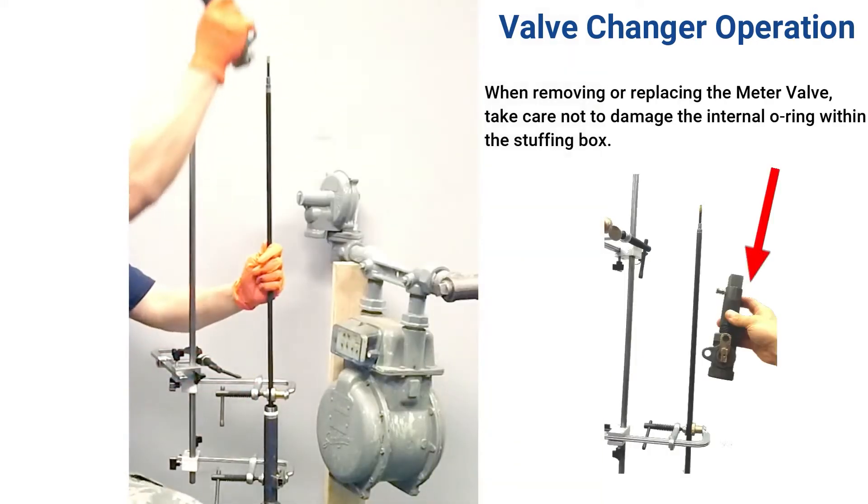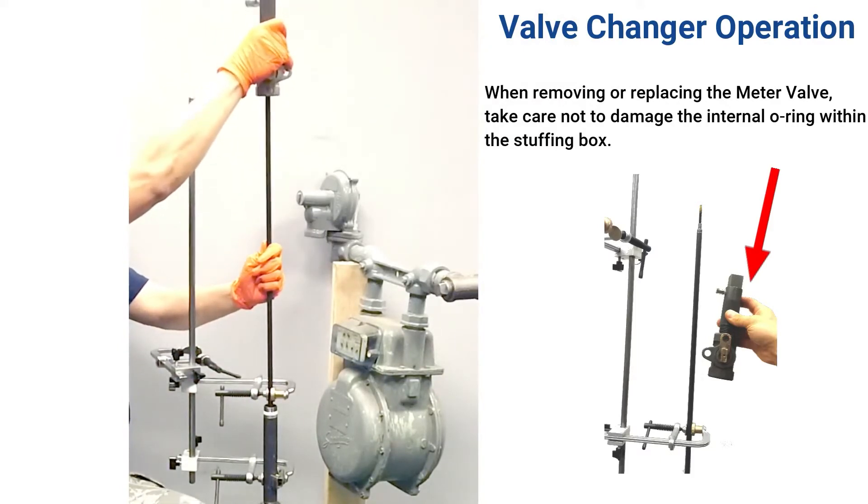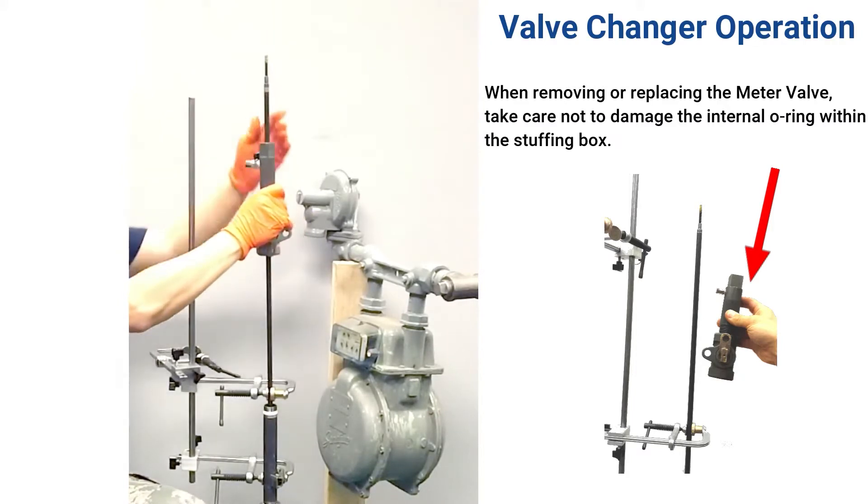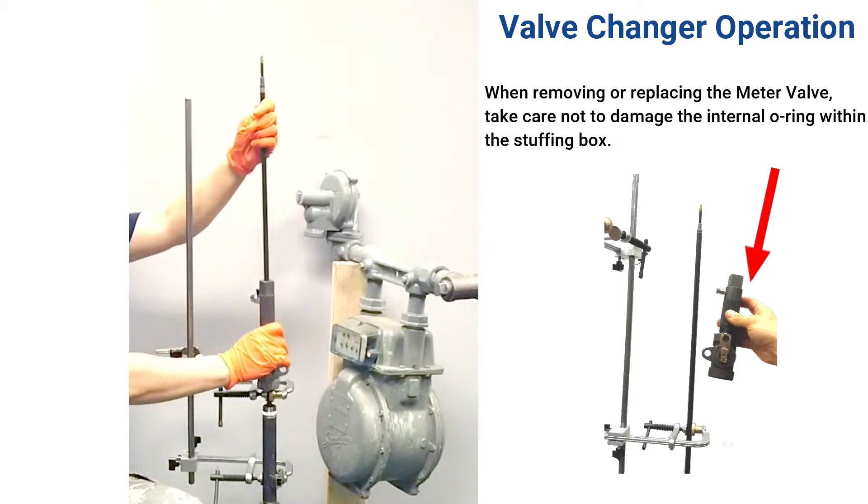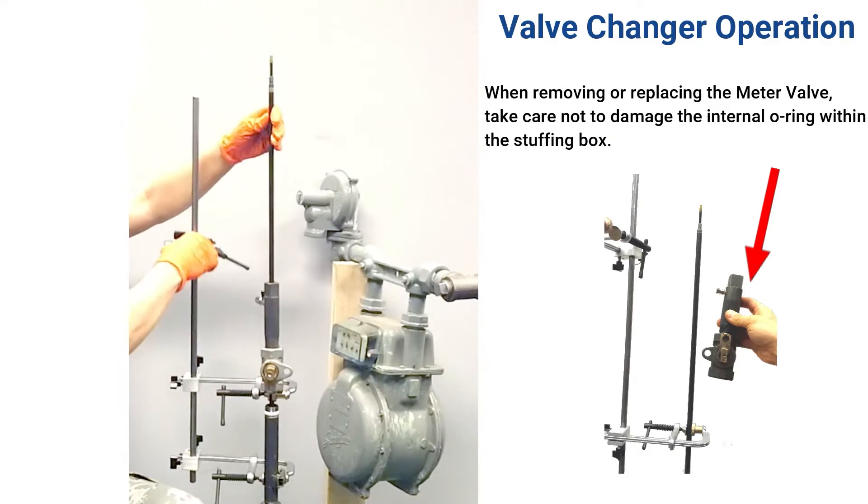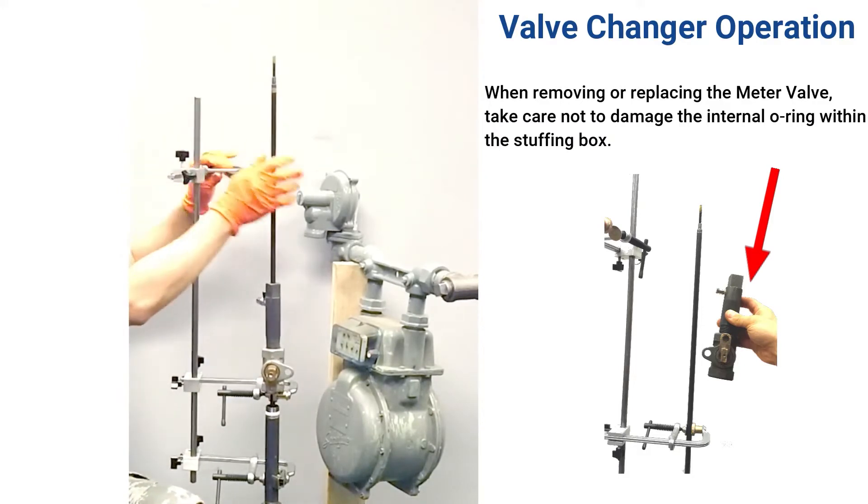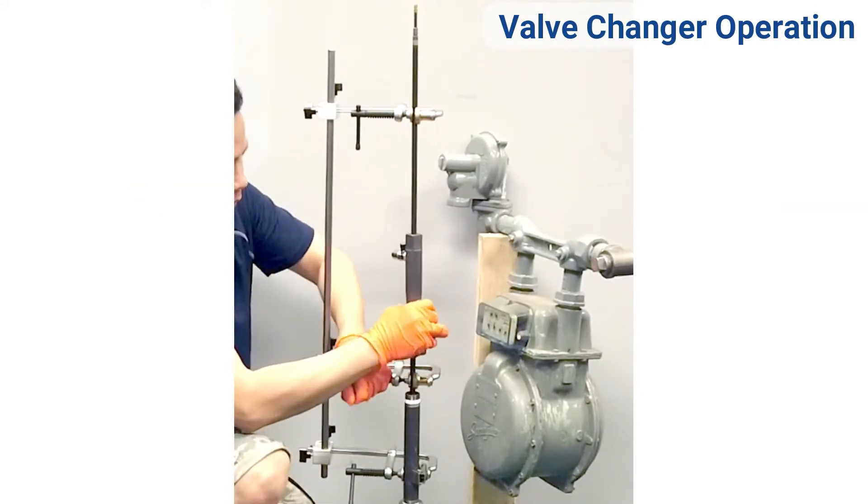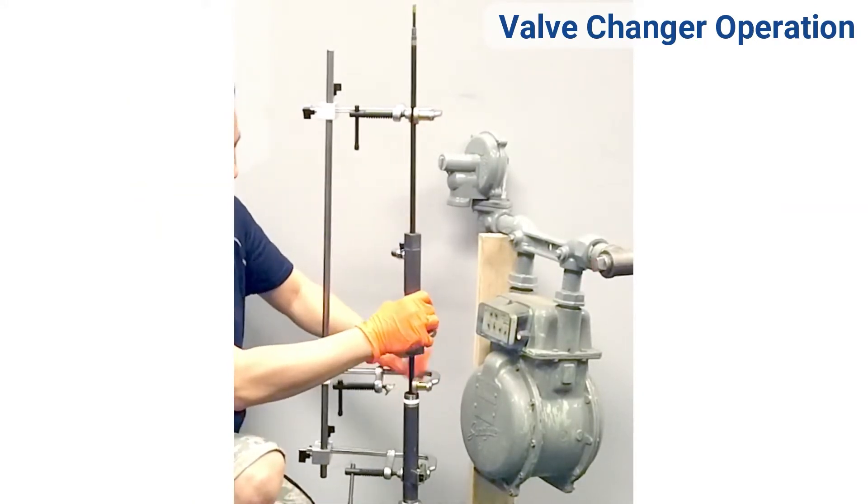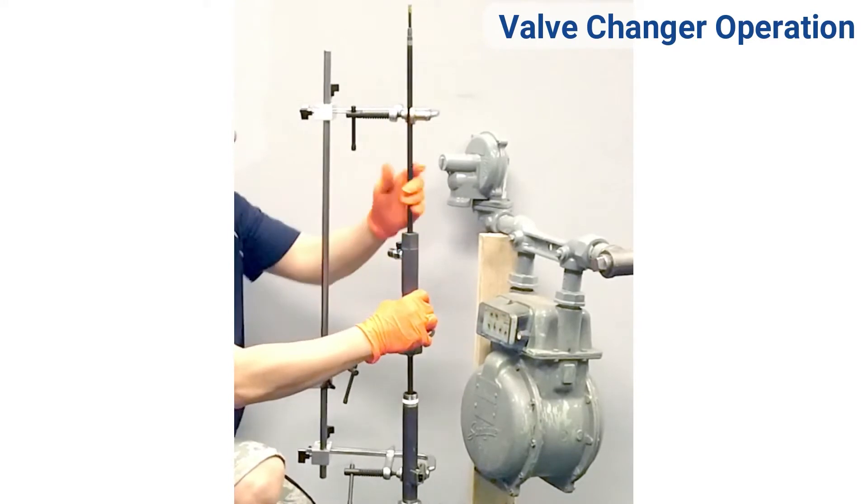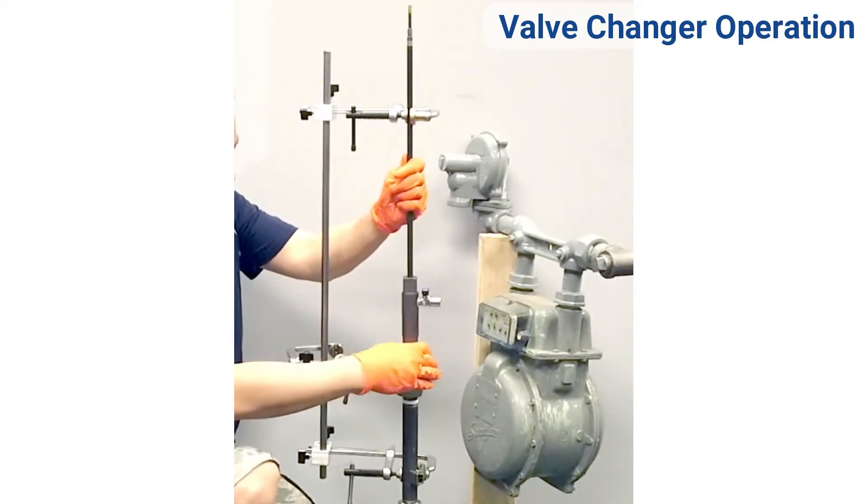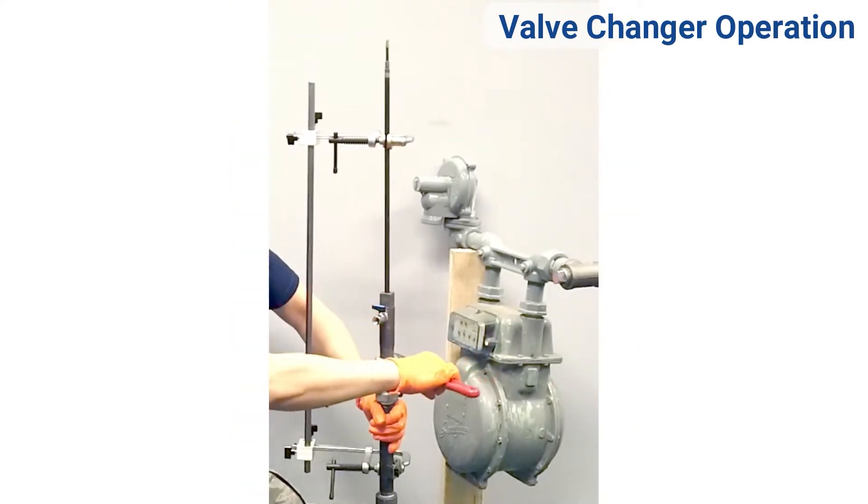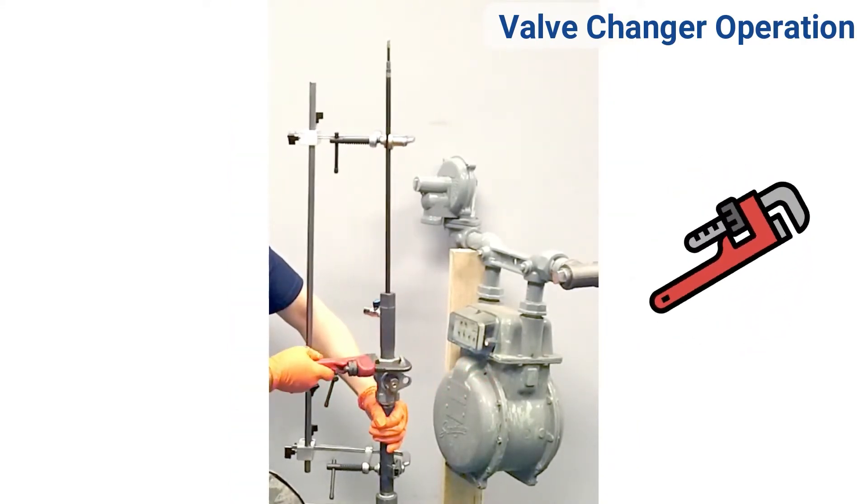Attach the new meter valve to the stuffing box and slide onto the shaft. Loosen and re-secure each clamp in order to travel down the shaft. Fasten the top clamp and remove the bottom clamp. Now fully tighten the meter valve onto the riser.